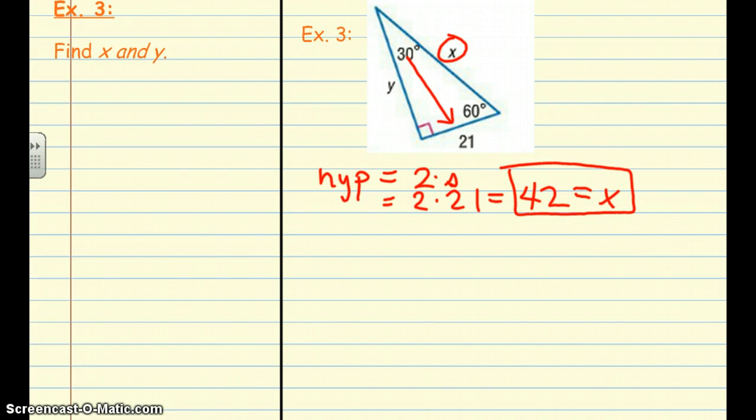Okay, and then we do the same thing. We know that the long leg is equal to whatever the short leg is times the square root of 3. We see that the short leg is 21, and I'm just going to leave it as 21 square root of 3.